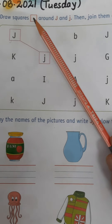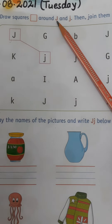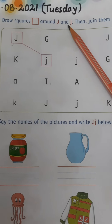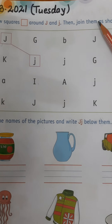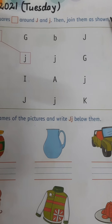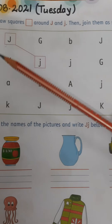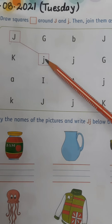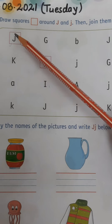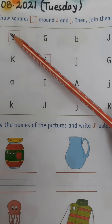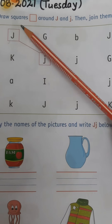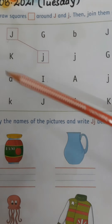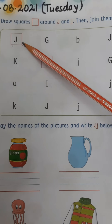Draw squares around capital J and small j, then join them as shown. Now look at here — this is capital J and this is small j. We have to keep them in a square. Which is capital J, we will make them in a square.